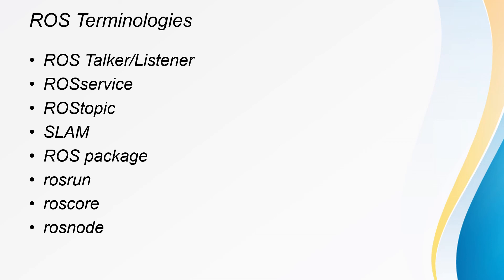Talking about ROS terminologies — the ROS platform consists of a publisher and a subscriber, so you have what are called talkers and listeners. You can have a sensor that publishes a signal, and then you have an actuator that listens or subscribes to the signal being published. In ROS you have ROS services and ROS topics, which consist of namespaces. We also use terms like SLAM — Simultaneous Localization and Mapping — a platform that allows your robot to move in a particular path, track itself, and come back to that path. We also have ROS packages, ROS Run, ROS Core, and ROS Node.